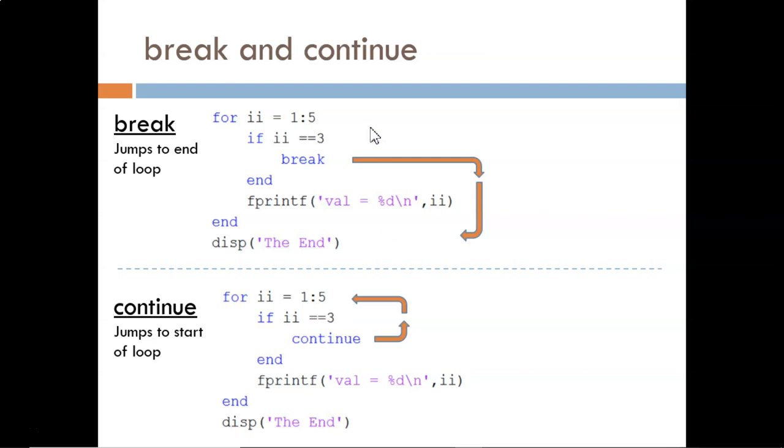In the top example, ii will equal 1, the if condition is false, so then the sentence is printed, and the loop returns to the top. Then, ii equals 2, the next sentence is written, and the loop returns to the top.